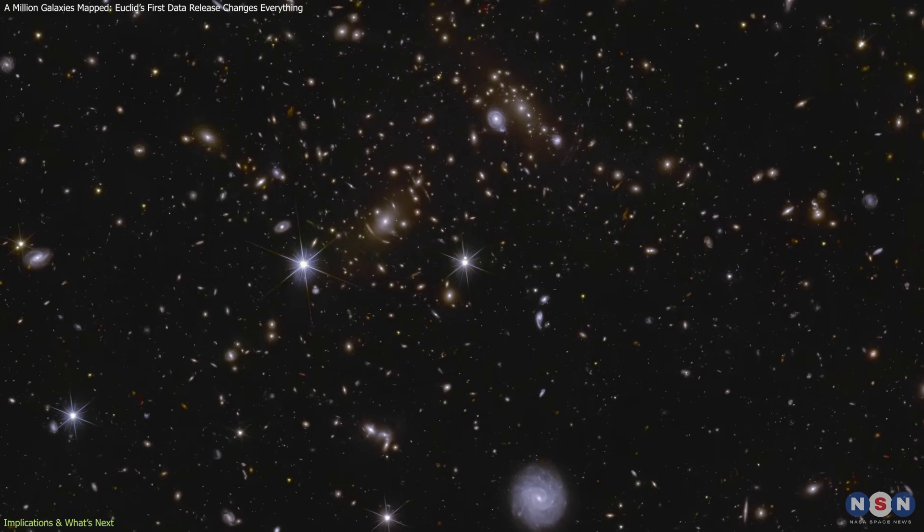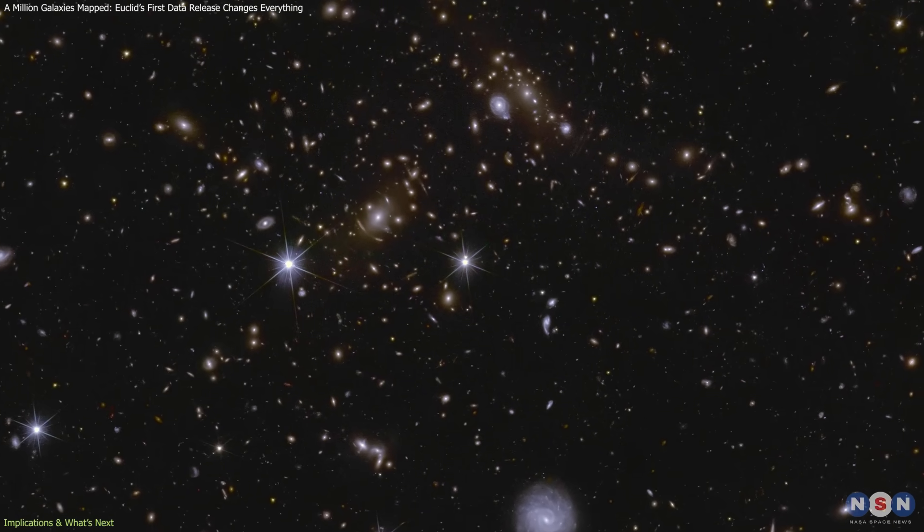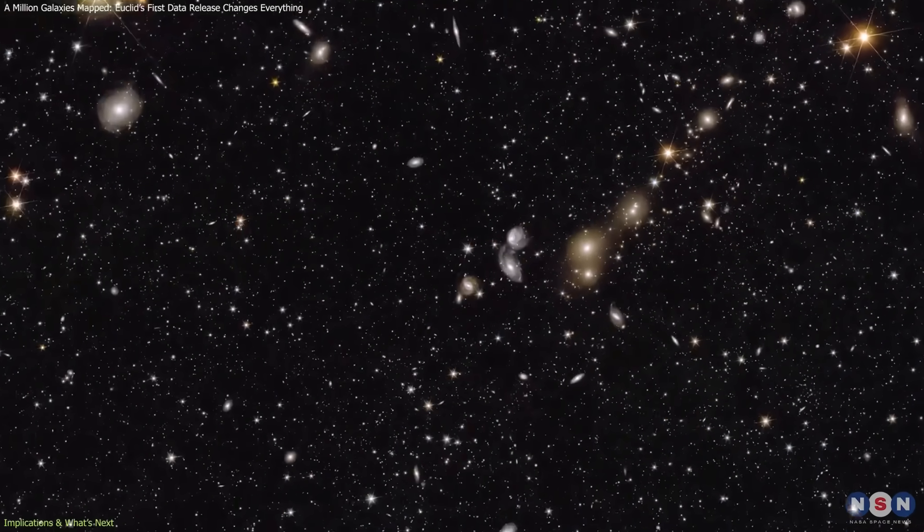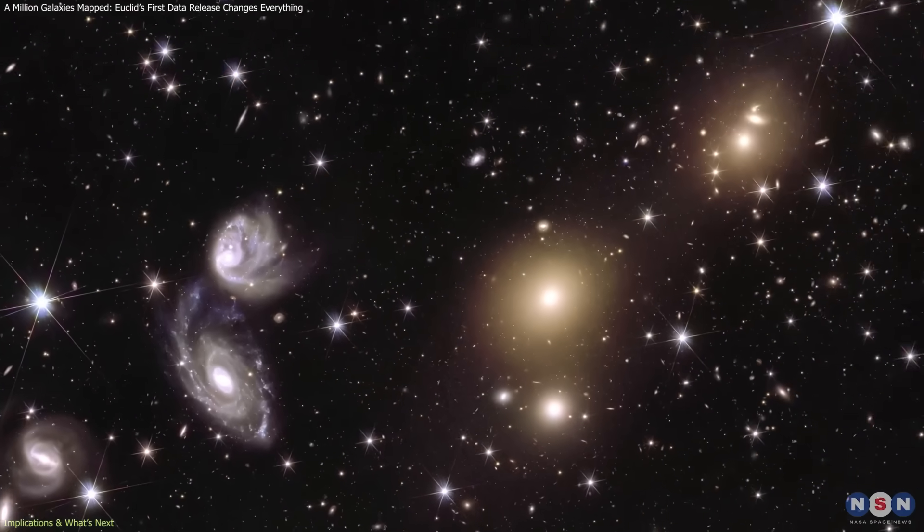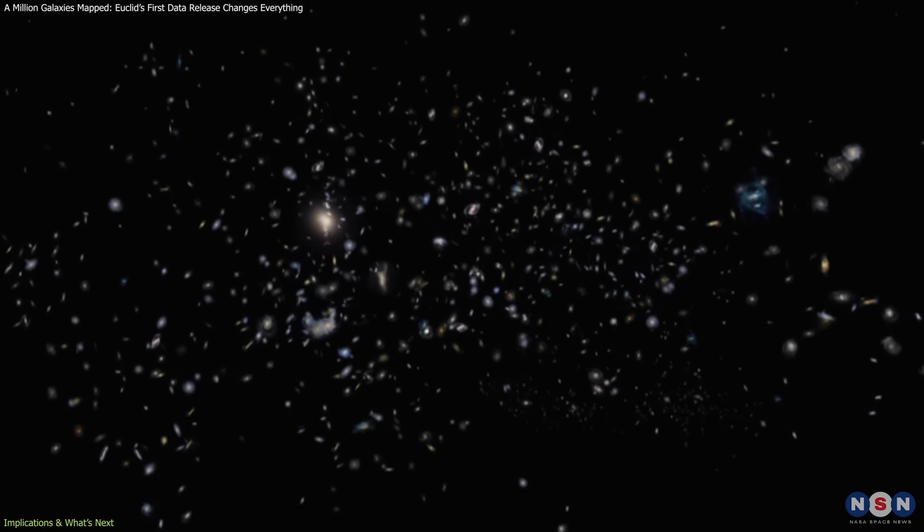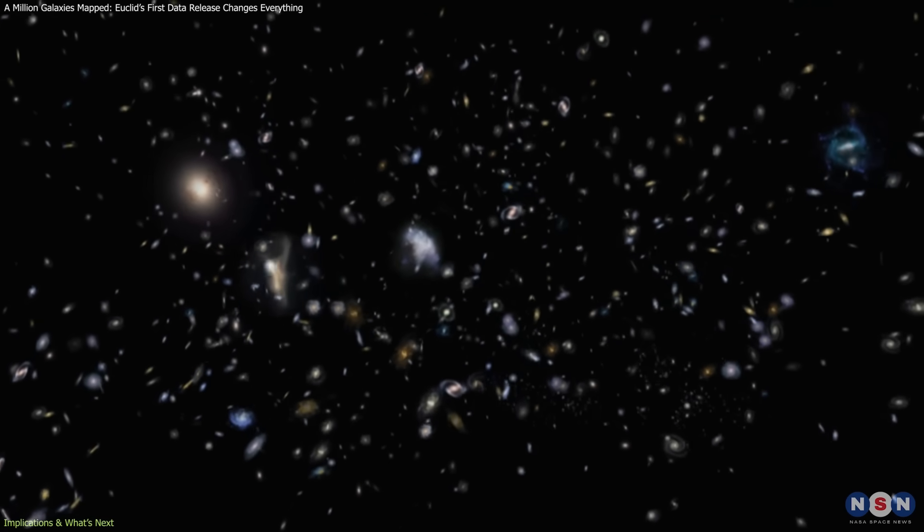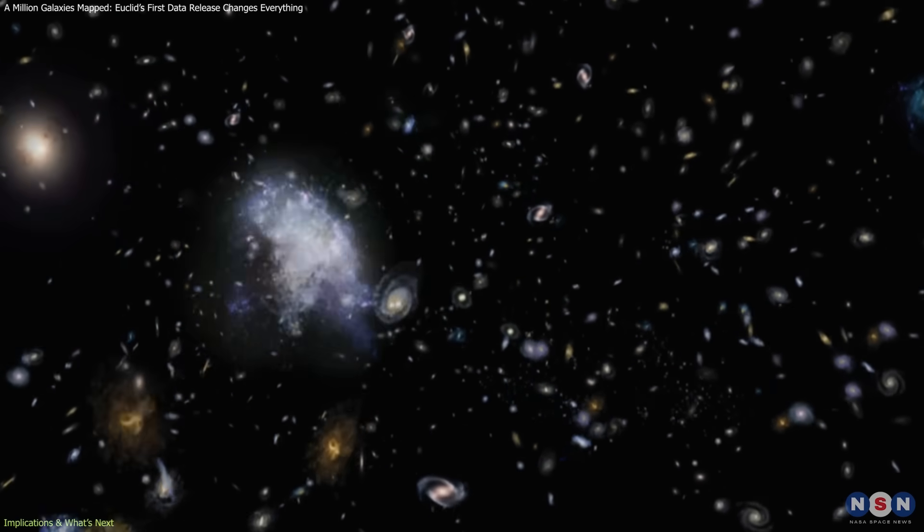The discoveries show that Euclid's strengths lie not just in depth or resolution, but in its ability to combine both across enormous areas of sky, a combination that makes it uniquely suited to revealing the broad patterns and subtle features that define the history of galaxies.